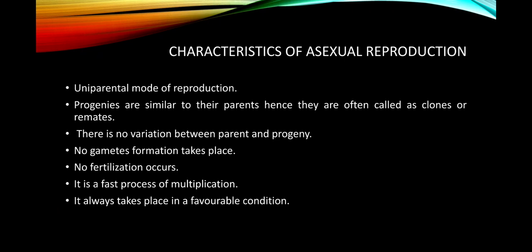Now we will discuss the characteristics of asexual reproduction. It is a uniparental mode of reproduction — only one parent is required. The progenies are similar to their parents, hence they are often called clones. There is no variation, no gamete formation, and no fertilization takes place. Because of this, it is a fast process of multiplication, and it always takes place in favorable conditions.